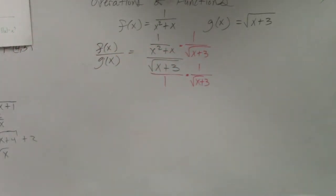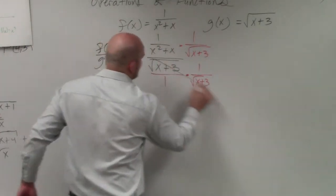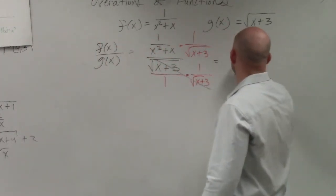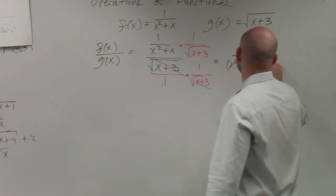Any number multiplied by its reciprocal goes to 1. So I'm left with 1 over x squared plus x times the square root of x plus 3.